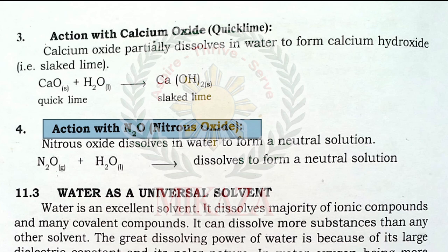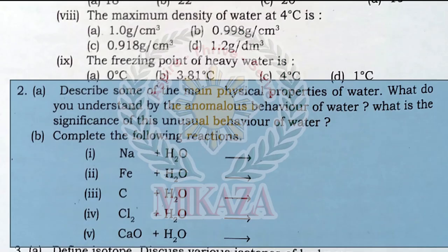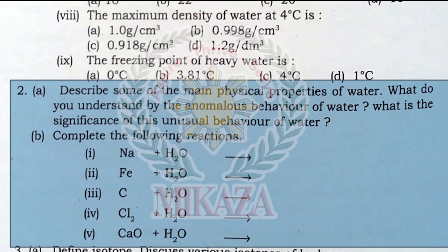To summarize what we covered today: first, the properties of water — colorless, odorless, and tasteless. Then, anomalous behavior of water, its bonding effects, and significance. Then, chemical properties — what water reacts with. For homework, describe the main physical properties of water, explain the anomalous behavior of water and its significance for aquatic life, and complete and balance the chemical equations for water's reactions.